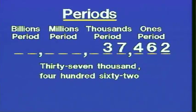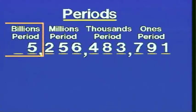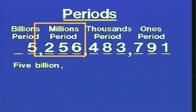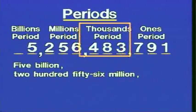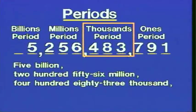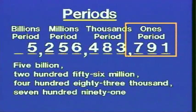I'm using a comma in the name of the number just in the same place as in the number written with digits — this is optional but helps us keep track of where we are. Let's take a larger number. We start with the leftmost period in use: the billions period. The number is 5, the period is billions, so we say five billion. Then we slide to the next period: 256 million. Then to the thousands period: 483,000. And then the ones period: 791.